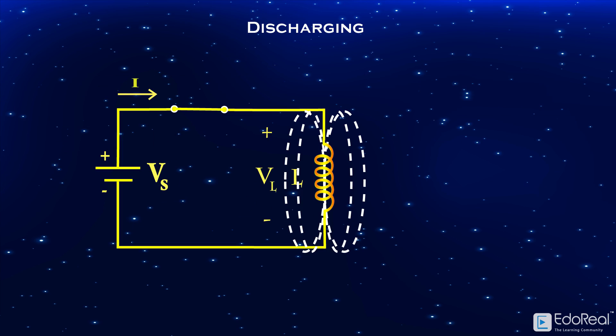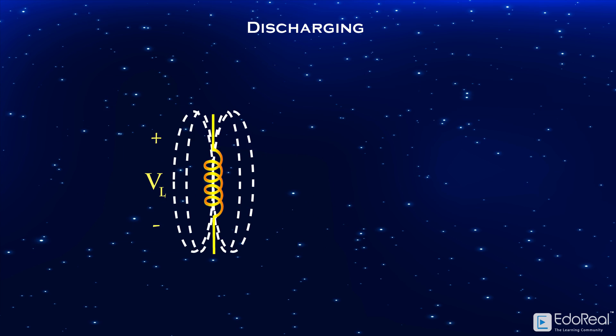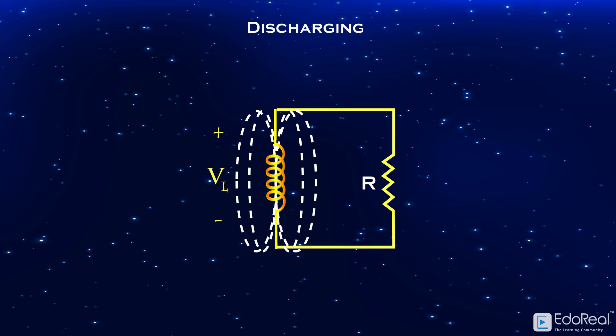Let's see what happens if we remove the inductor from the circuit and connect it to a resistor. The inductor acts as a current source because it has stored energy in the form of magnetic field.